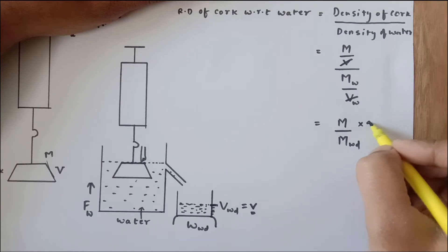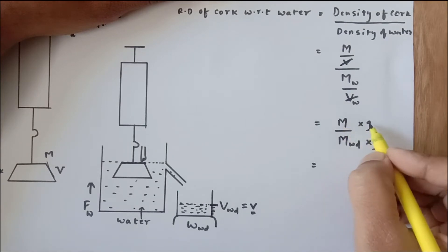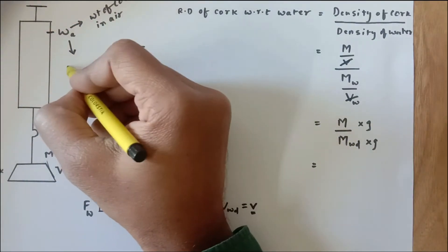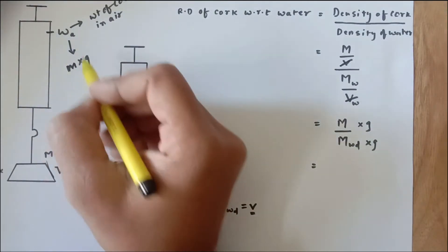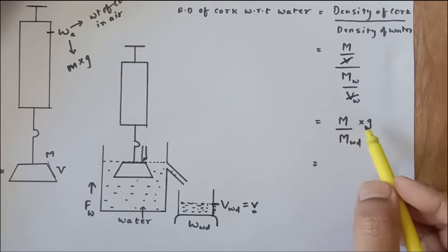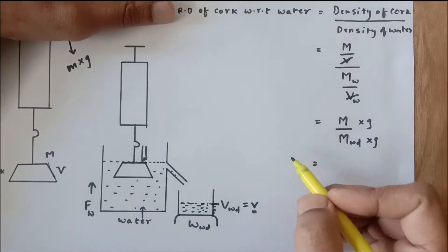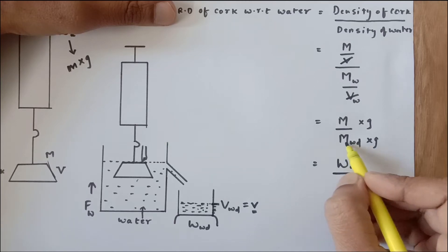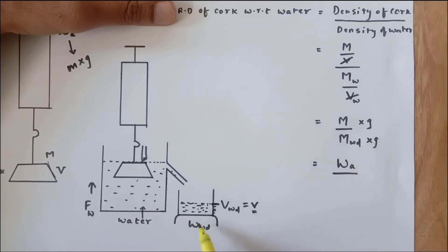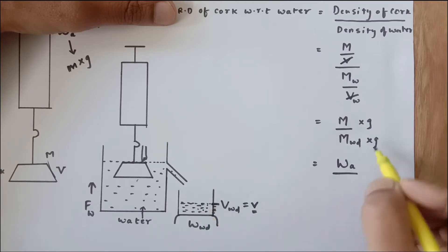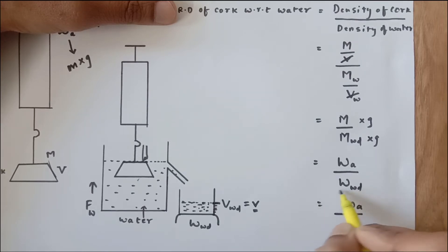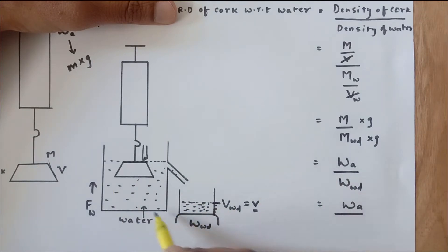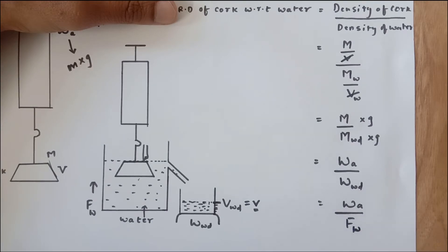I need to multiply numerator and denominator by g. Mass times g gives weight — specifically, mass times g is always the weight in air. So this becomes weight of cork in air divided by weight of water displaced. We know that weight of fluid displaced equals the upthrust. Therefore, the relative density equals weight of cork in air divided by upthrust by water.